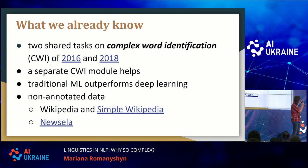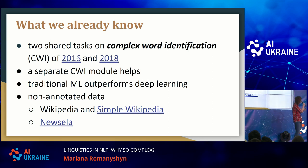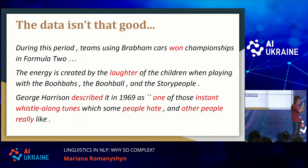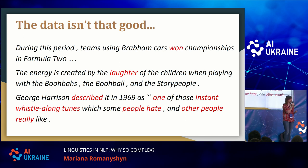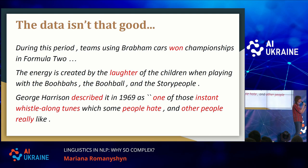There's not much data. There is some non-annotated data. Some of you may know that Wikipedia comes in two versions: regular Wikipedia and Simple Wikipedia for people with lower comprehension levels. There's also a resource called Newsela that has the same piece of news written for different levels of reading comprehension. Unfortunately, the data from the shared tasks of 2016 and 2018 wasn't great — words like "one" or "laughter" were marked as complex, and some annotators on Amazon Mechanical Turk just annotated every other word as complex, which doesn't make sense. This is garbage-in data we have to deal with in real life.